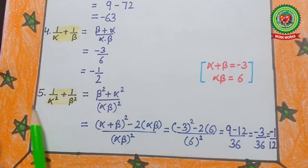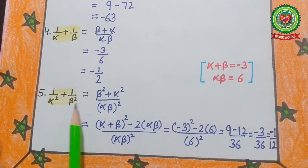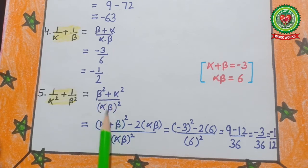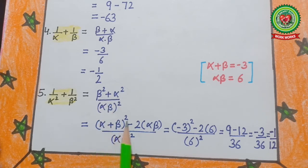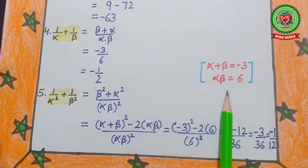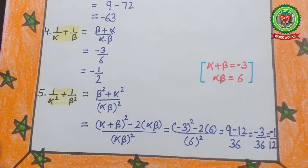Question number 5: 1/α²+1/β². After taking LCM we get (β²+α²)/(αβ)². The numerator uses the formula α²+β² = (α+β)²−2αβ. So the expression becomes [(α+β)²−2αβ]/(αβ)². After filling in the values of α+β and αβ, our answer is −1/12.